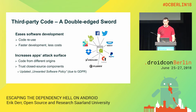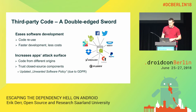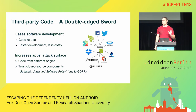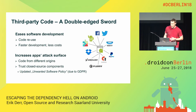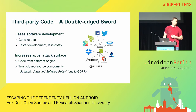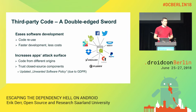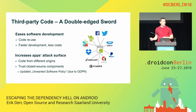Third-party code is a double-edged sword. On the one hand, it enables software development reuse of existing code rather than reinventing the wheel, which typically results in faster app development and reduced development costs. But on the other hand, it also increases the app's attack surface because you use code from different origins. If you additionally use closed source components, you have to trust those third-party providers to adhere to security and privacy best practices.